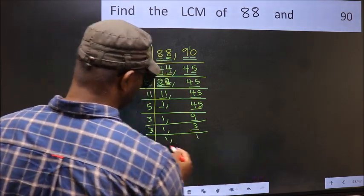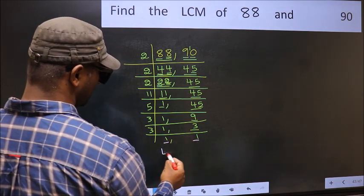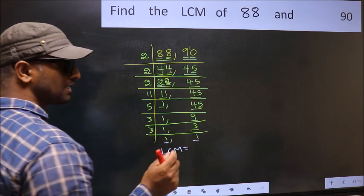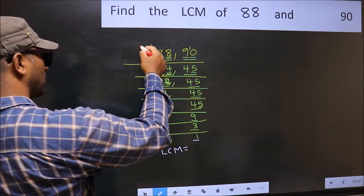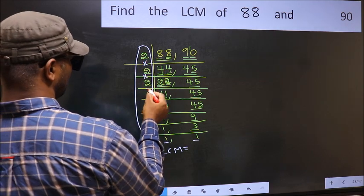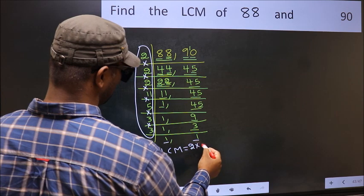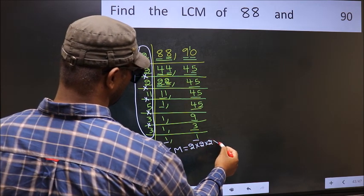So our LCM—we got 1 in both places. Our LCM is the product of these numbers. That is 2 times 2 times 2 times 11...